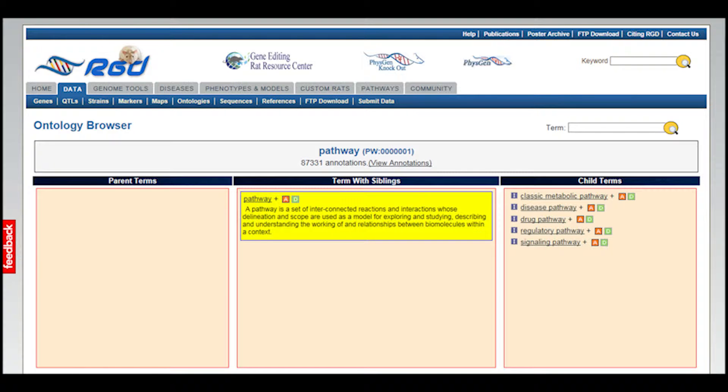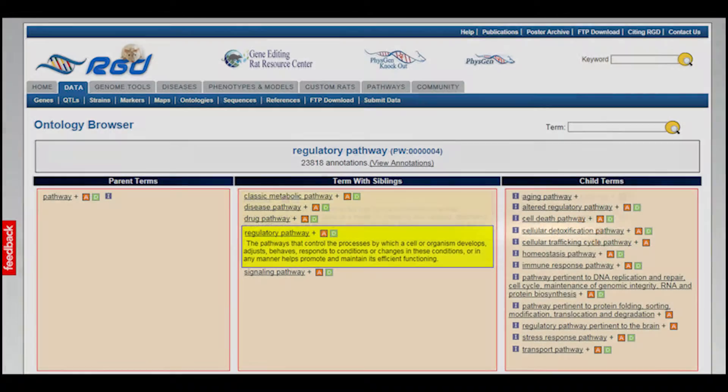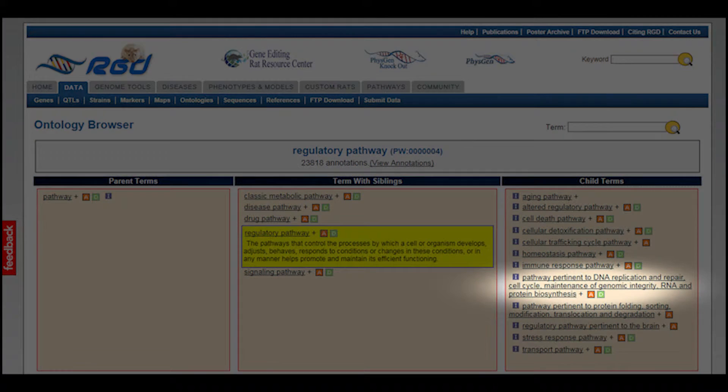Looking at the ontology browser, click on the child term regulatory pathway, then on pathway partner to DNA replication and repair, cell cycle, maintenance of genomic integrity, and RNA and protein biosynthesis.